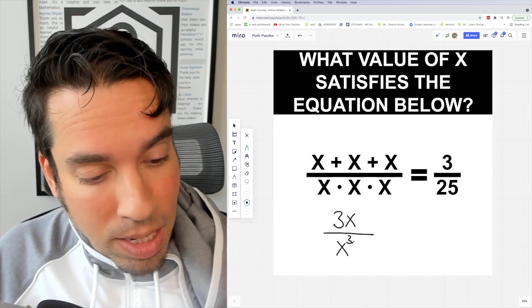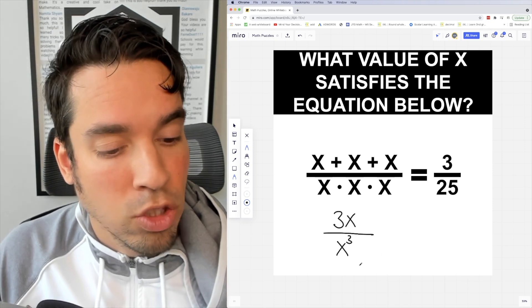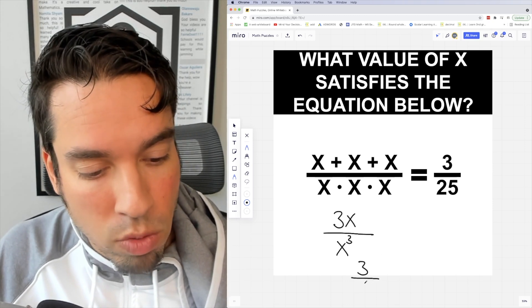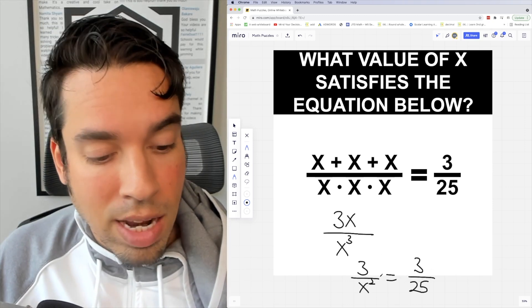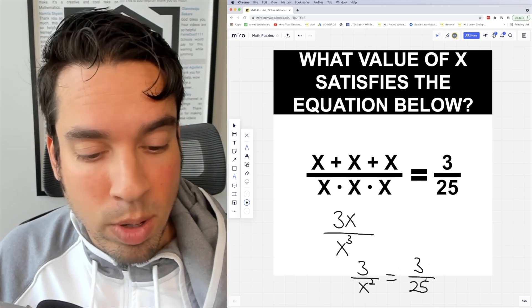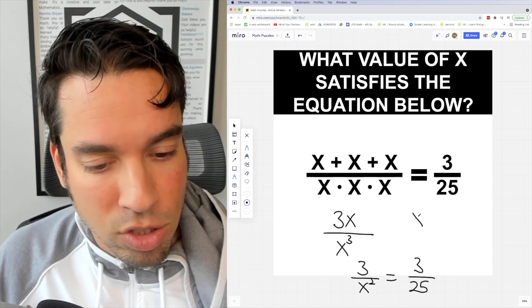one of the x's on top cancels out as does one on the bottom, so this now becomes 3 over x squared. Now since we have 3 over x squared equals 3 over 25, we can quickly see that x